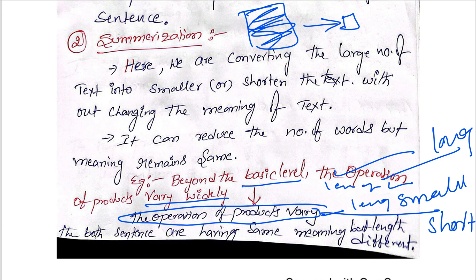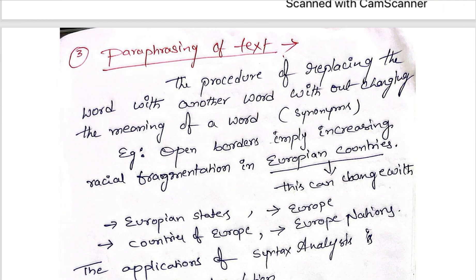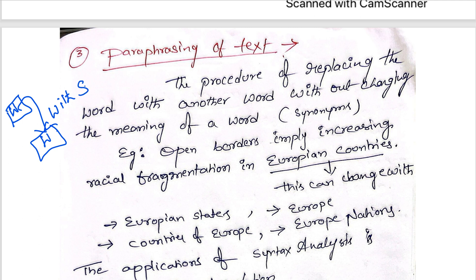This is a simple example of summarization. Moving to the third motivation: paraphrasing of the text. Simply put, paraphrasing is the procedure of replacing one word with another word without changing the meaning. Think of synonyms in English — the same meaning is available for multiple words. That is nothing but paraphrasing the text.